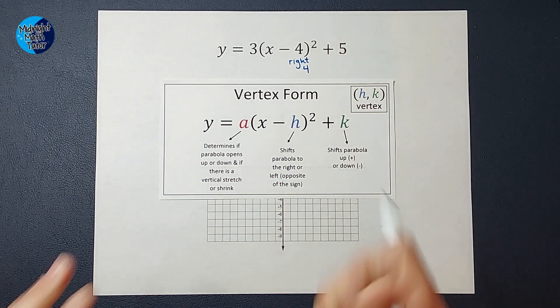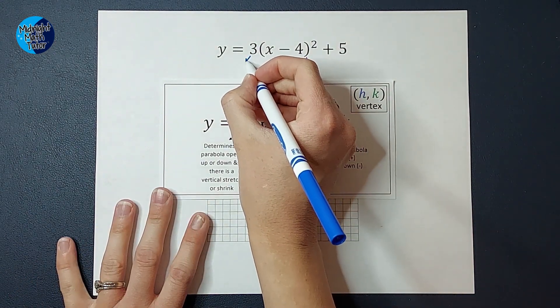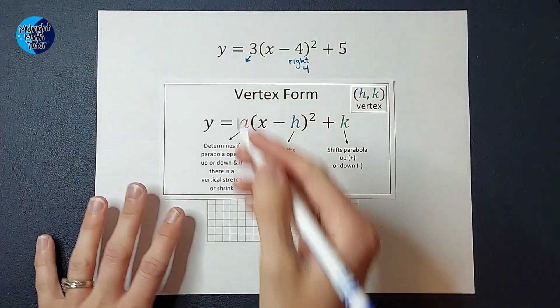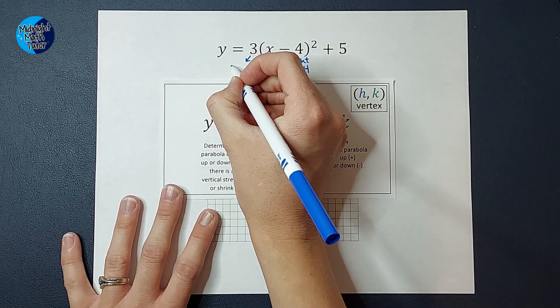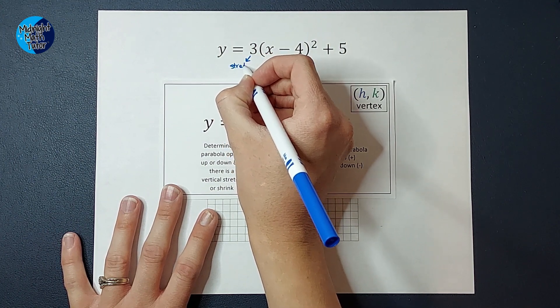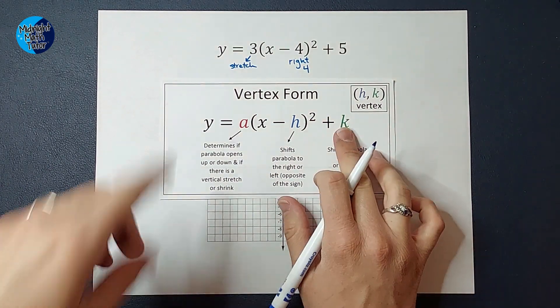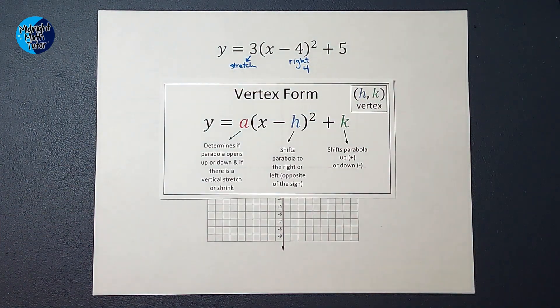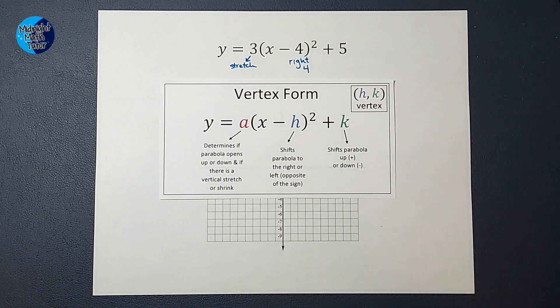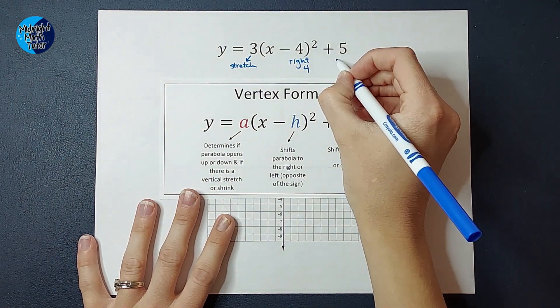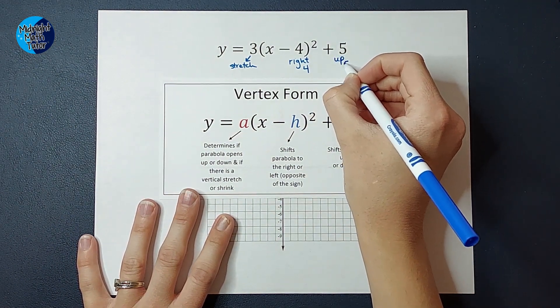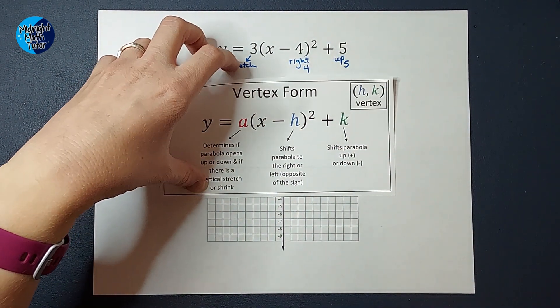And I forgot to say that this three tells me we're going to have a stretch, which we will figure out exactly what that looks like in a second. And this number being added or subtracted on the back tells me how much my graph is shifted up or down. And this one, you do stick with the sign, so that plus five tells me we're going to go up five.